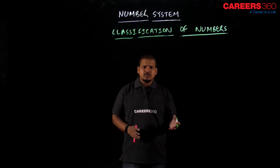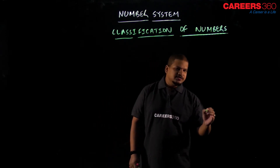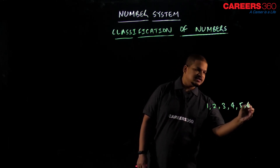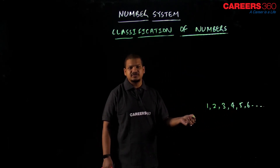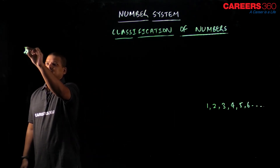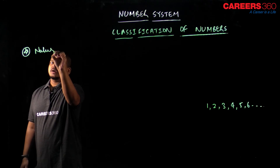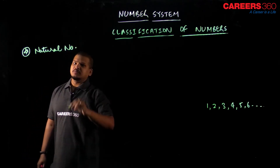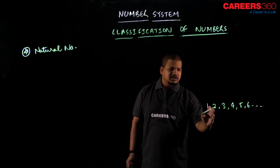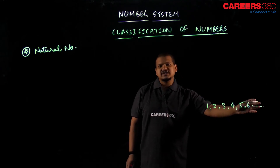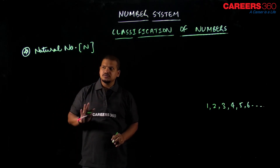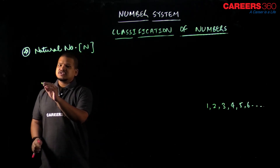Firstly we will begin with the obvious one, that is counting numbers. If you count the numbers, they start from 1, 2, 3, 4, 5, 6, and so on — they go up to positive infinity. These types of numbers are known as natural numbers. Natural numbers start from 1 then 2, 3, 4, 5, 6 and go up to infinity, and this is represented by N.